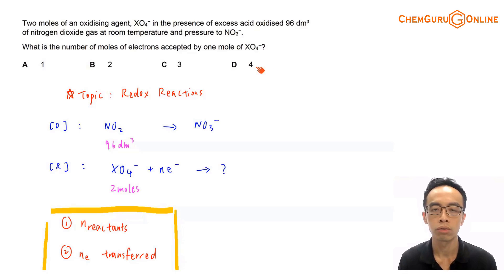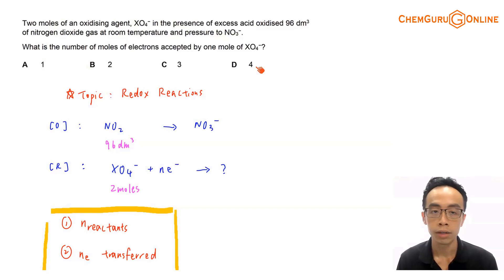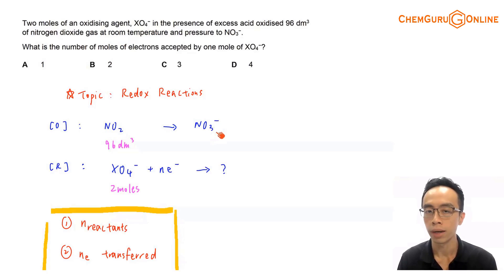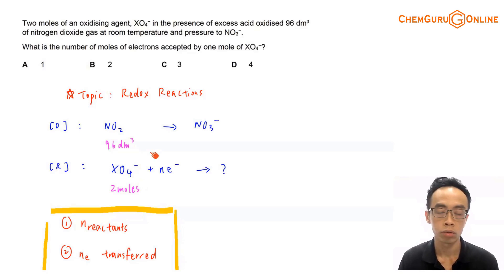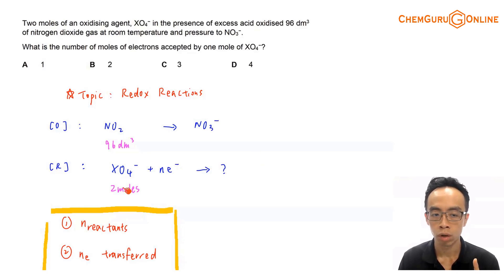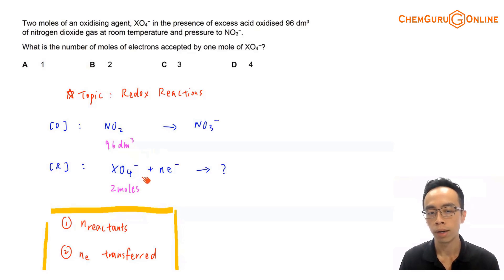This question is under redox reaction. I know that NO2 is oxidized — the question tells me that XO4⁻ is the oxidizing agent and NO2 is oxidized to NO3⁻ in acidic medium. I'm given 96 dm³ of NO2. Since XO4⁻ is an oxidizing agent, it must be reduced to something else. We are given 2 moles of XO4⁻, and we want to determine the mole ratio of XO4⁻ to electron gain — essentially solving for N.